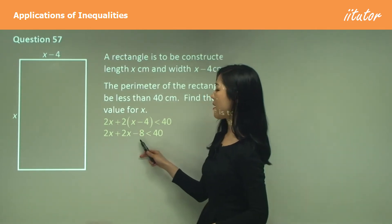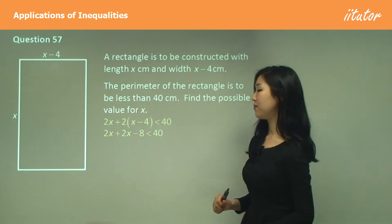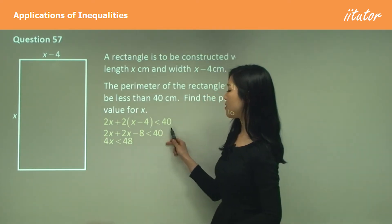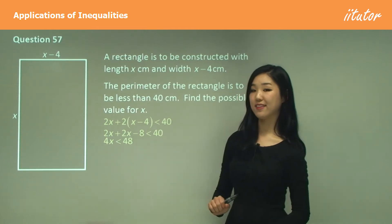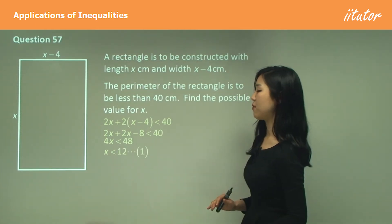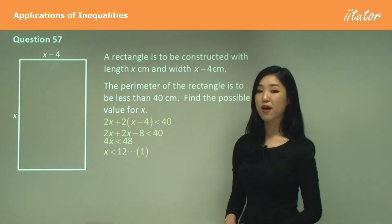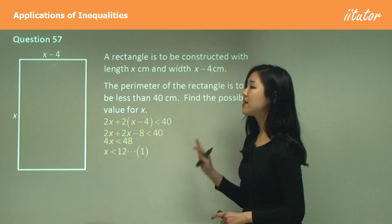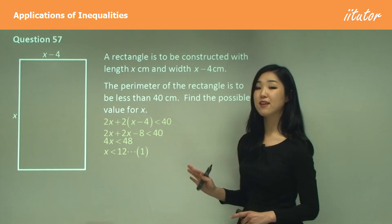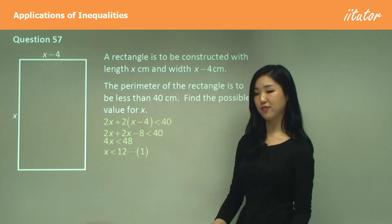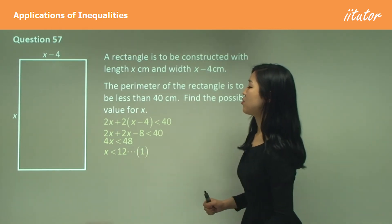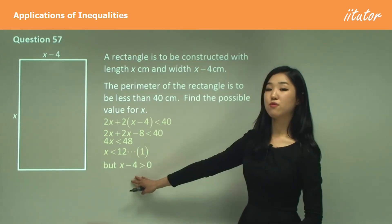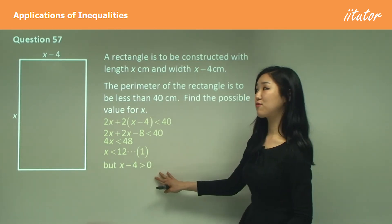Expanding: 2x + 2x − 8 < 40, so 4x < 48, giving x < 12. However, we must also consider the context — x minus 4, the width, must be greater than 0 because a side length cannot be zero or negative.